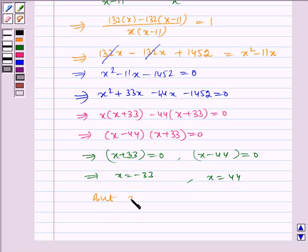But x is equal to minus 33 not possible. Therefore x is equal to 44.